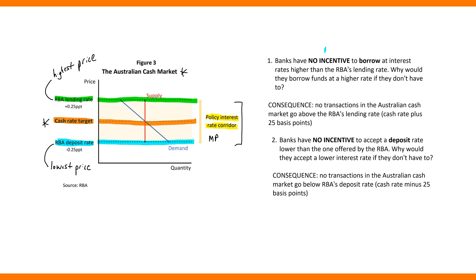The first key idea is that commercial banks have no incentive to borrow funds at an interest rate higher than the RBA's lending rate. If a bank needs to borrow, why would it borrow at a rate above this? Why would you borrow funds at a higher rate if you don't have to? The consequence is that no transactions in Australia's cash market go above the RBA's lending rate, which is the cash rate plus 25 basis points. This is the highest price in the market — it would be silly for a bank to borrow above this rate when it can get funds from the RBA at exactly this value.